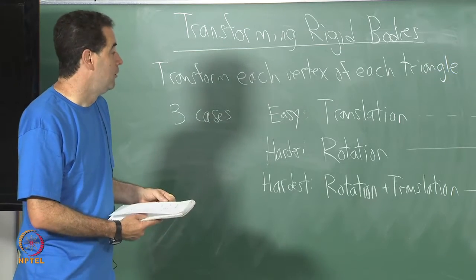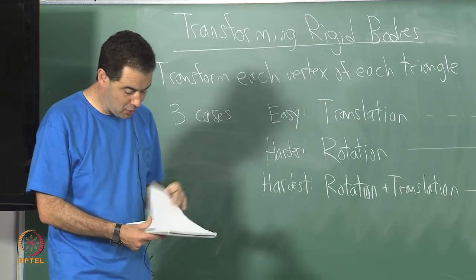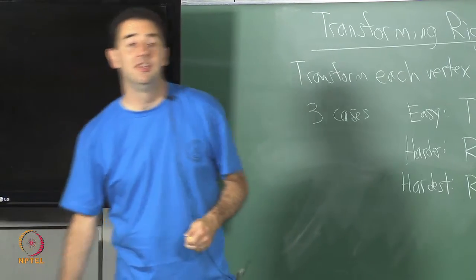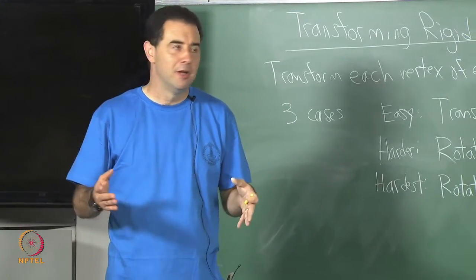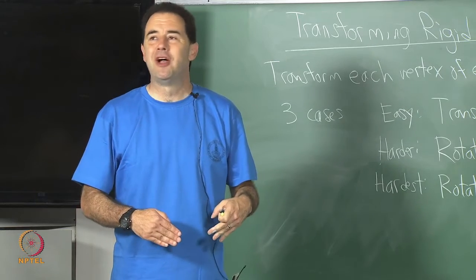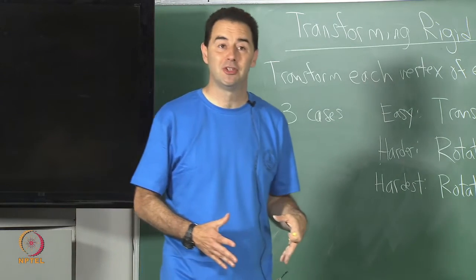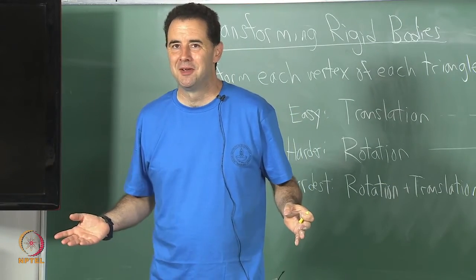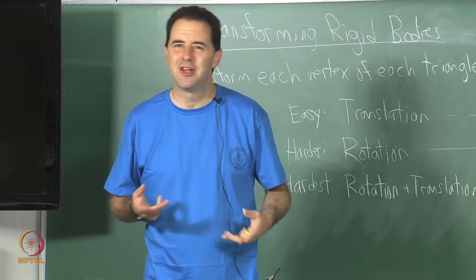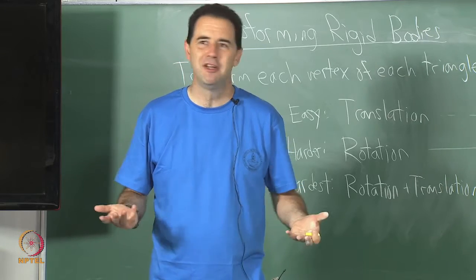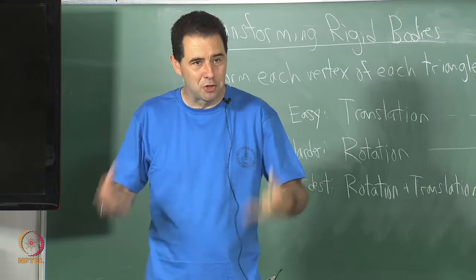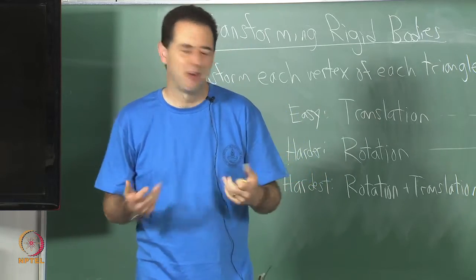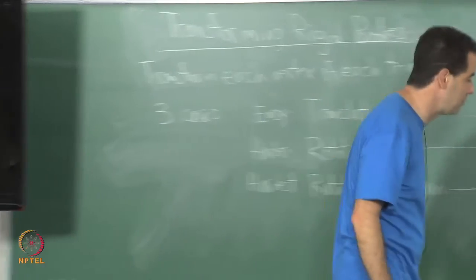I now want to get to rotation, and in order to do that I want to generalize a little bit. I want to talk about linear transformations and drop one dimension down. Instead of going directly to 3D rotations, I am going to talk about 2D linear transformations and then discuss the kinds of properties that a 2D rotation should have. 2D is very easy to understand, and then we will generalize back up to 3D and see some interesting structure.